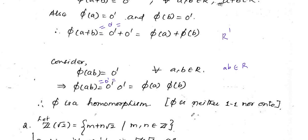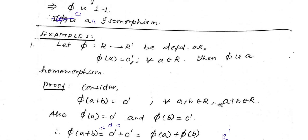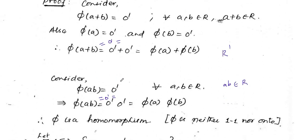This phi is neither one-to-one nor onto. It is not one-to-one because 0 prime has many pre-images. It is not onto because R prime contains elements other than 0 prime — there are elements in R prime that have no pre-image under phi. So phi is not onto.